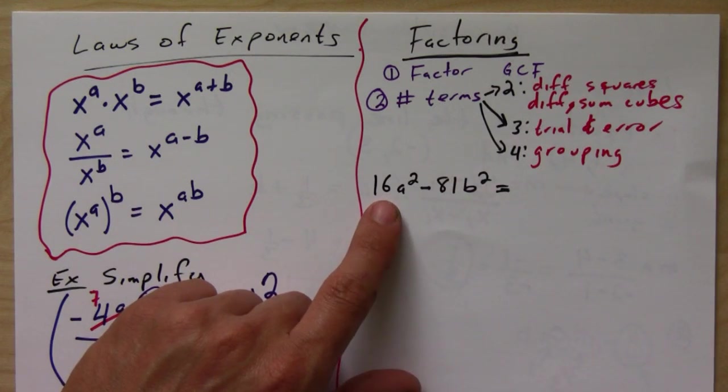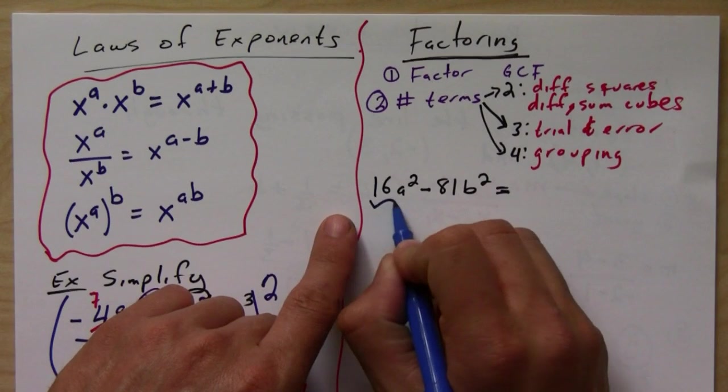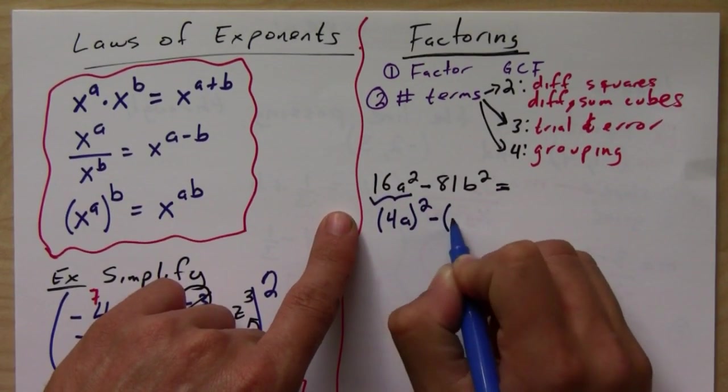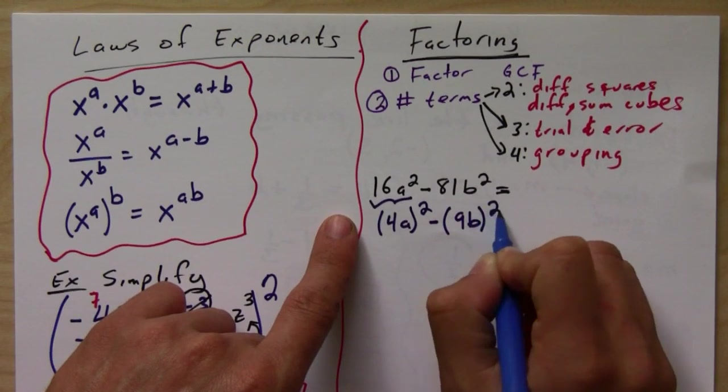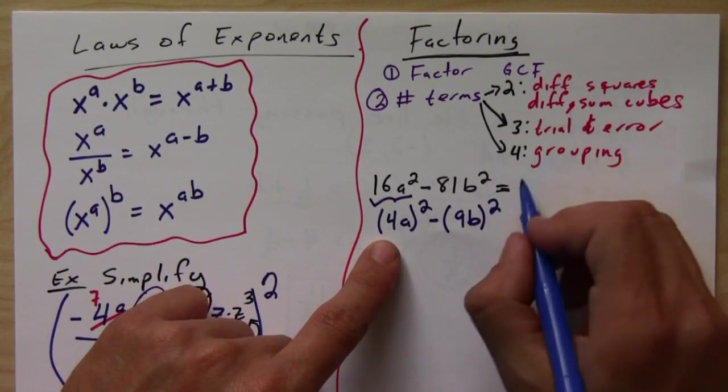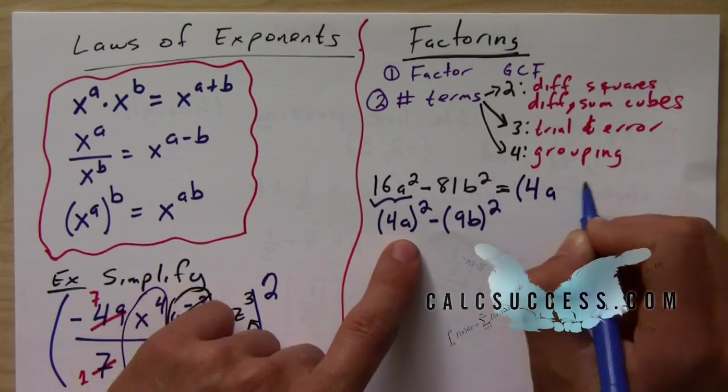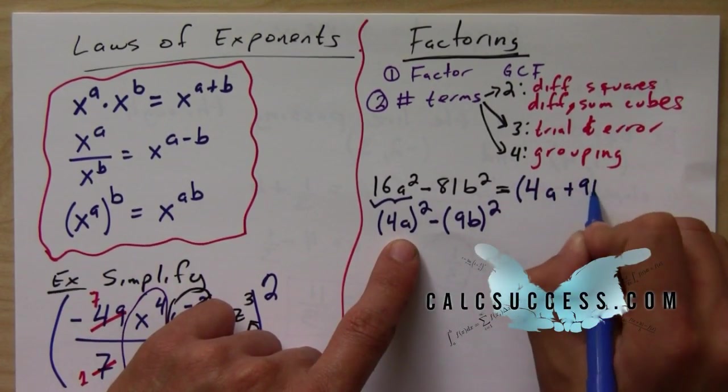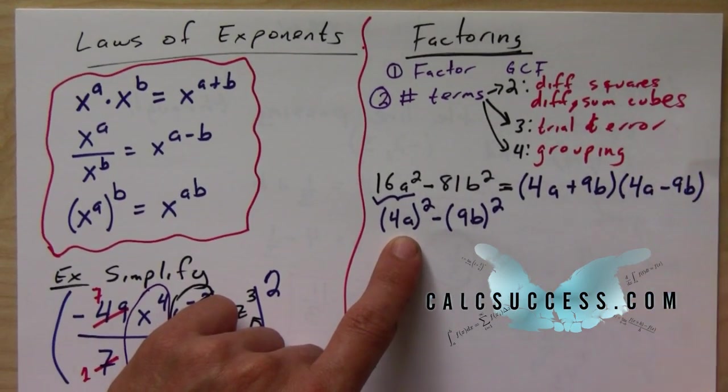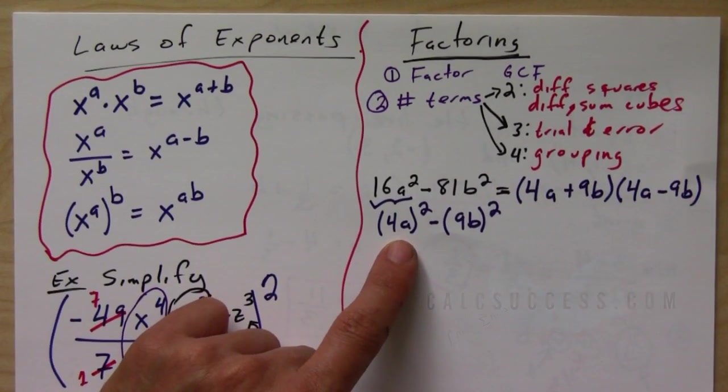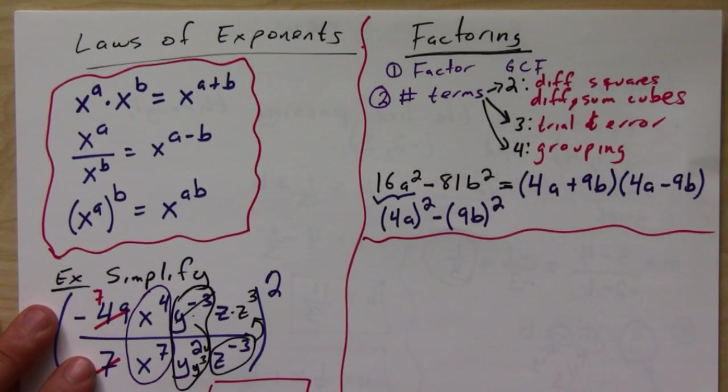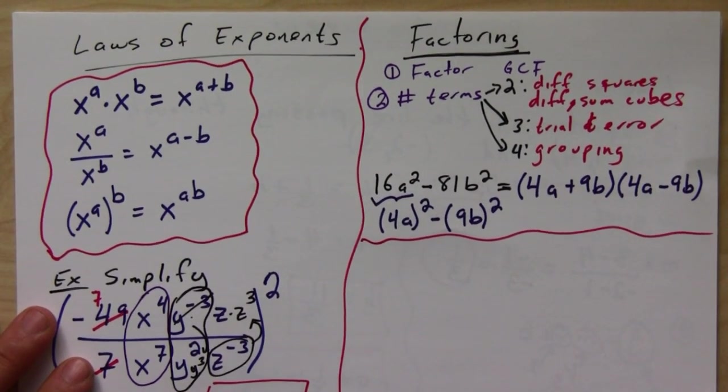So notice that this guy is 4a squared minus 9b, the whole thing squared. And so to factor this, all it would have to be is 4a plus 9b times 4a minus 9b. And that's it. So that's the difference of squares. And remember, you can't factor a sum of squares.